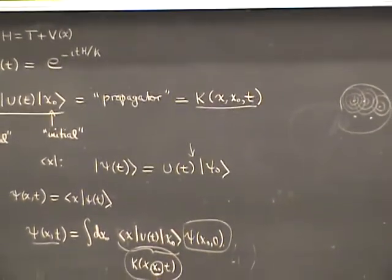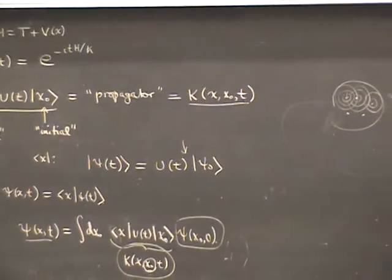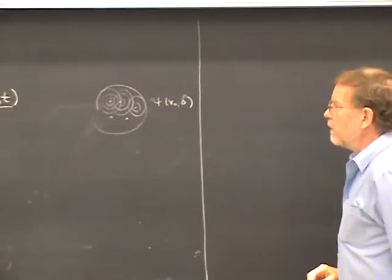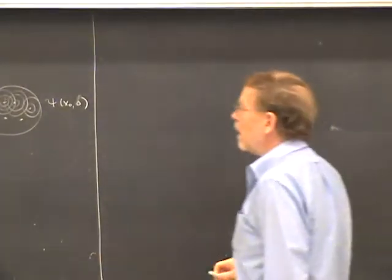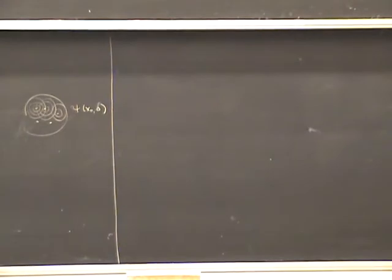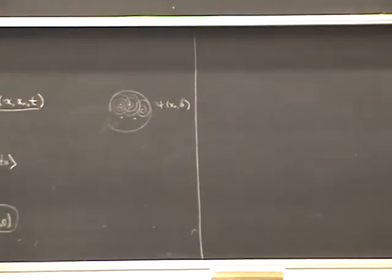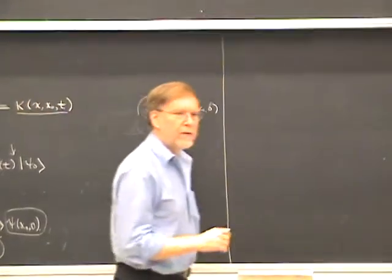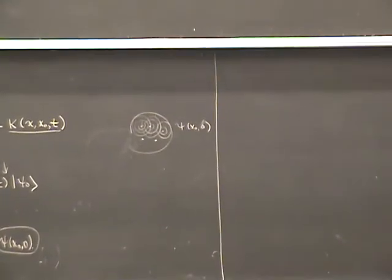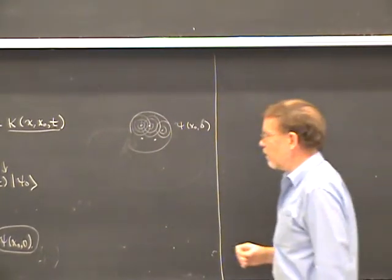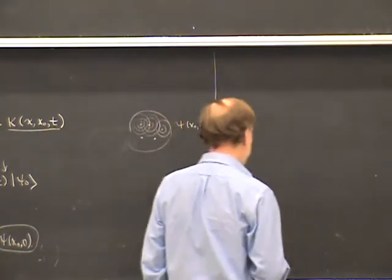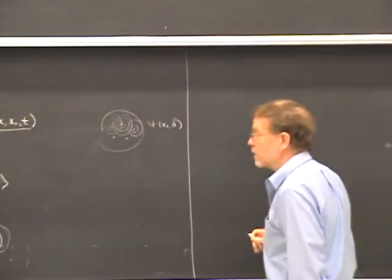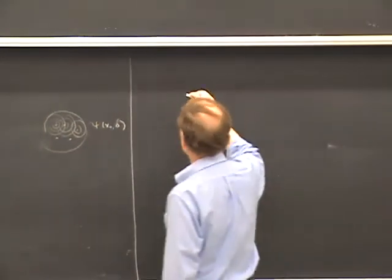That's a little bit of background on the propagator and its X-space matrix elements. I'd like to work out an example right away — the propagator for the case of the free particle — just to post it as a result to have. We'll refer back to it quite a few times later on in the course, so let's do it now. It's just a calculation.